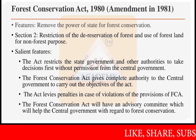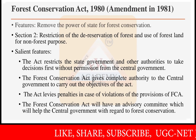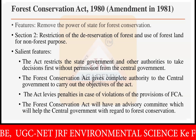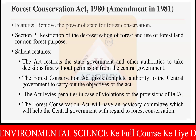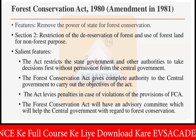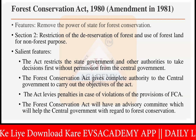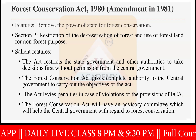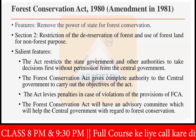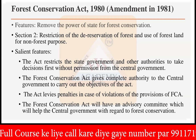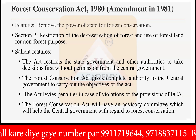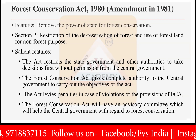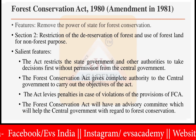Looking at the salient features of the Forest Conservation Act 1980, the act restricts the state government and other authorities from taking decisions without permission from the central government. The state government cannot take any kind of authoritative instruction or decision without the central government's permission. The Forest Conservation Act gives complete authority to the central government to carry out the objectives of this act, so state governments have no rights in the destruction of the forest.